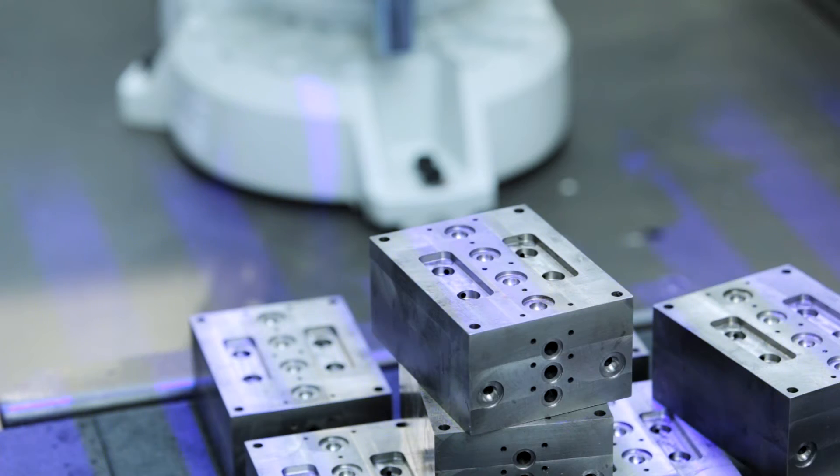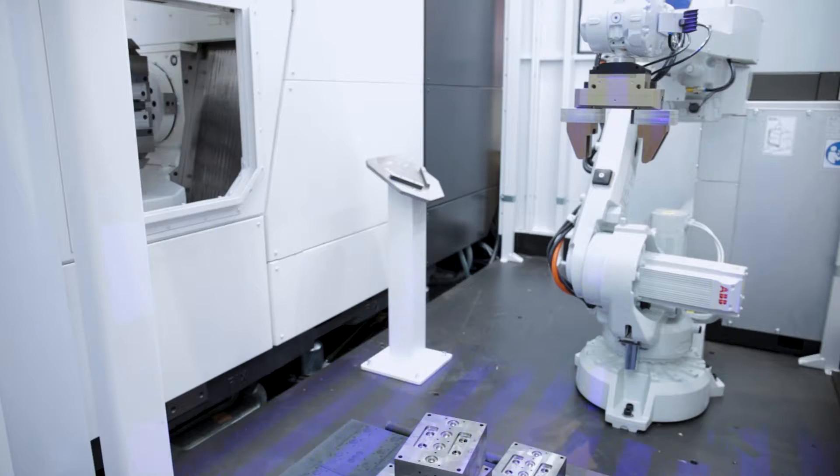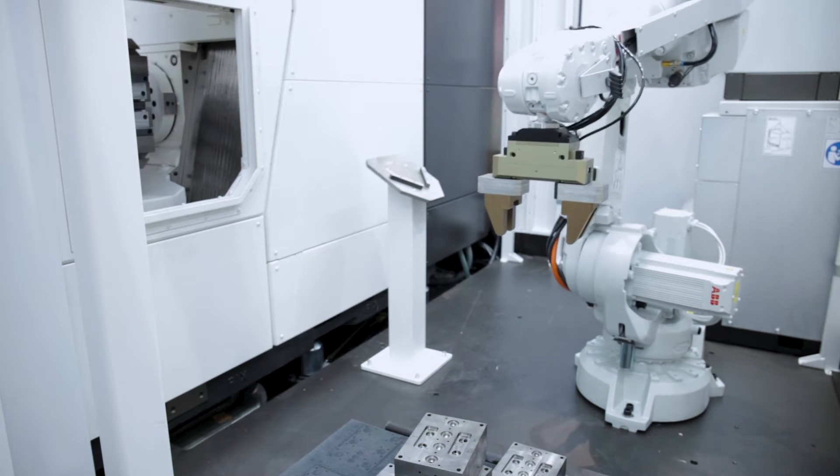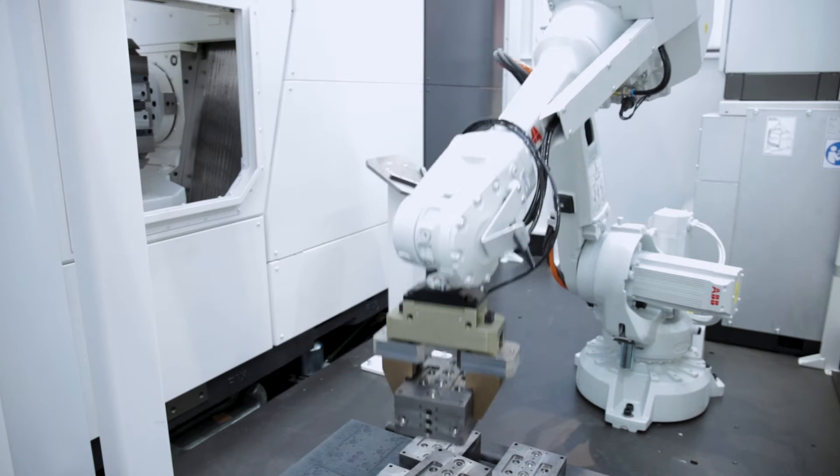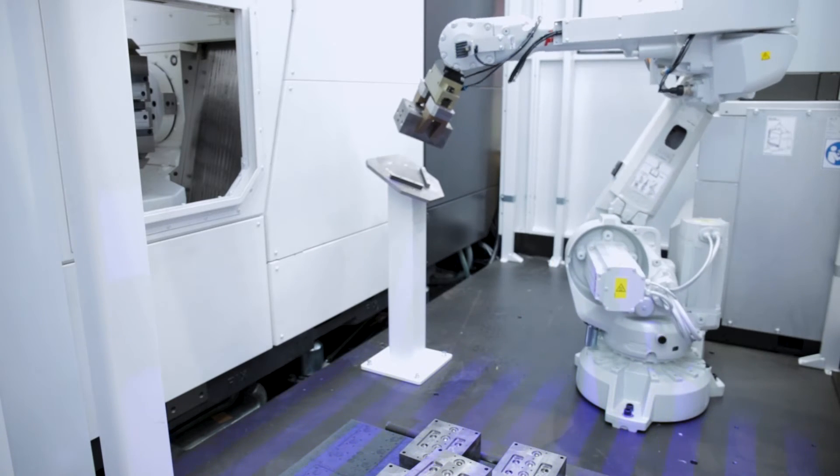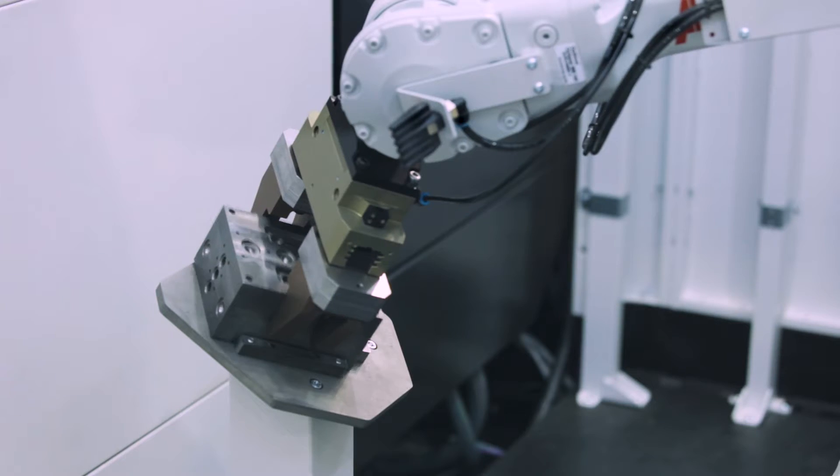These robots have a vision system, so you load the parts to the pallet. The vision system will detect the orientation of the part. It will also see if the part is upside down or something like that. By this we can easily load the machines with the help of these robots.